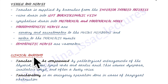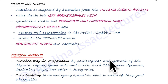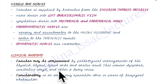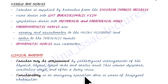Finally, looking at the clinical anatomy related to the trachea: the trachea may be compressed by pathological enlargements of the thyroid, thymus, lymph nodes, or the aortic arch, and this causes dyspnea, irritative cough, and often a husky voice. Tracheostomy is an emergency operation done in case of laryngeal obstruction.